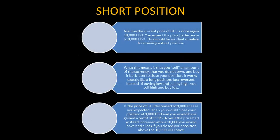How do you short a position? Assuming the current price of BTC is ten thousand dollars and you expect the price to decrease to nine thousand dollars, this is an ideal situation for opening a short position. You sell an amount of the currency you do not own and buy it back later to close your position. If the price of BTC drops to nine thousand dollars as expected, you close your position and gain a profit of approximately eleven point one percent. If the price instead increases above ten thousand dollars, you would have a loss if you closed there.